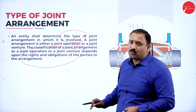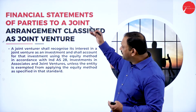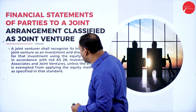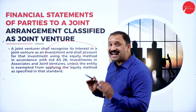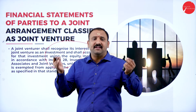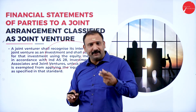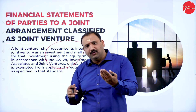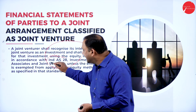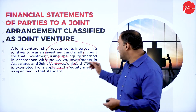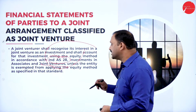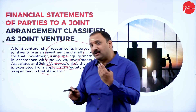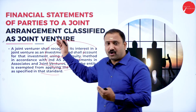Unless every point in the agreement is covered, we will not be able to measure the economic activity. Financial statements of parties to a joint arrangement classified as a joint venture recognize interest in the joint venture as an investment. This is in accordance with Indian Accounting Standard 28, which talks about investments in associates and joint ventures, and the entity will be exempted from applying the equity method as specified, falling under IAS 28 rather than IAS 111.